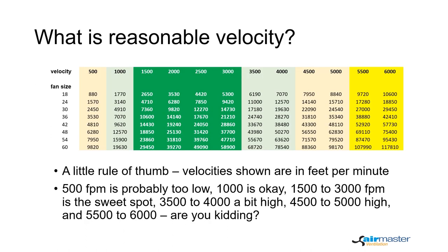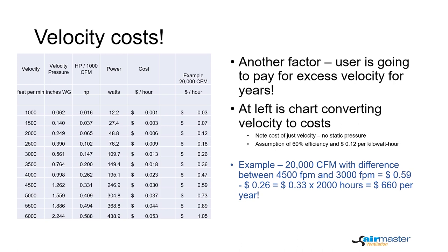So what is reasonable velocity? Of course, reasonable means different things to different people, but here's a little guidance. Below you'll see a table with velocity across the top, fan size down the left-hand side, and the values shown are calculated values for the flow. We would suggest that the area in green is probably the area which meets the criteria of reasonable. There are certain cases where you might want to exceed to one side or another, but in general this is reasonable.